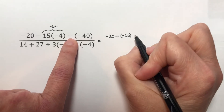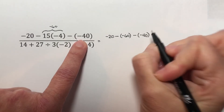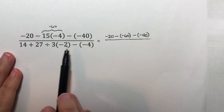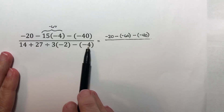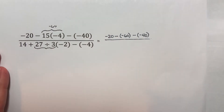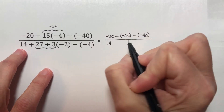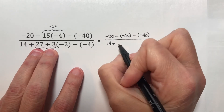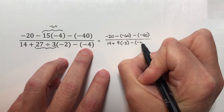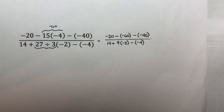Minus negative 40. You want to be really careful when you're just copying numbers over — it's a very easy place to make a mistake. We miscopy something, don't pay attention, and we mess up the whole problem. Now let's look at the bottom. We cannot simplify inside the parentheses, there aren't any exponents. I need to look for multiplication and division from left to right, and I have a division right there. So I have 14 plus 27 divided by 3 is 9, times negative 2, minus negative 4.